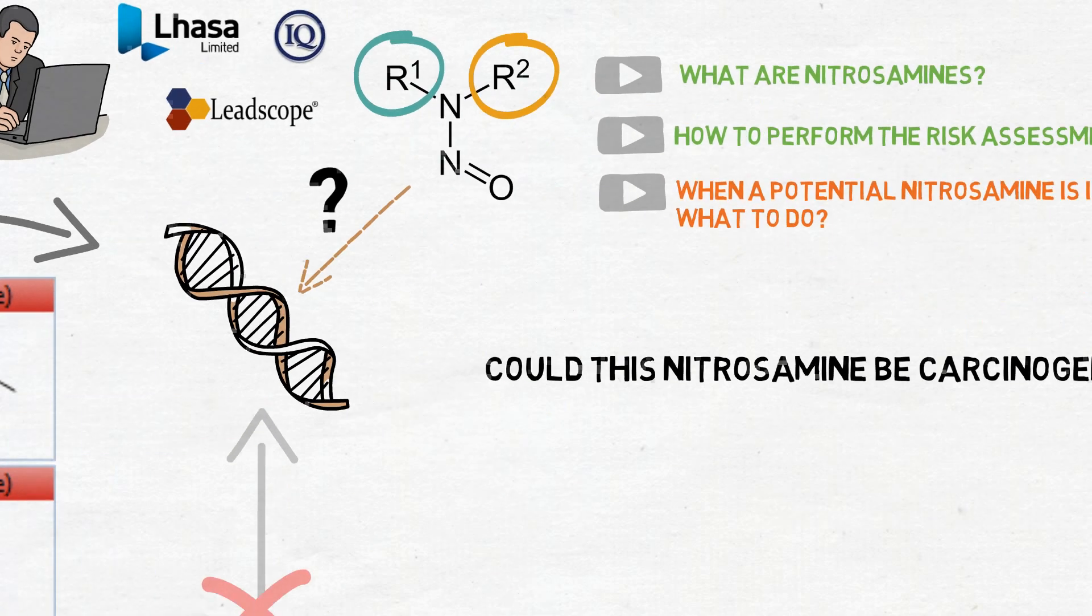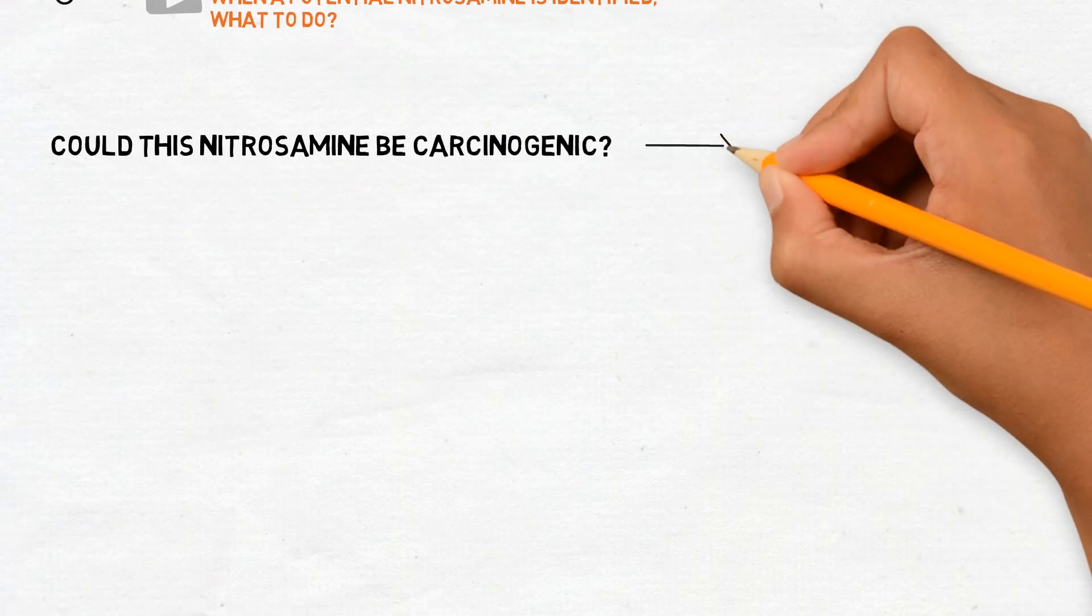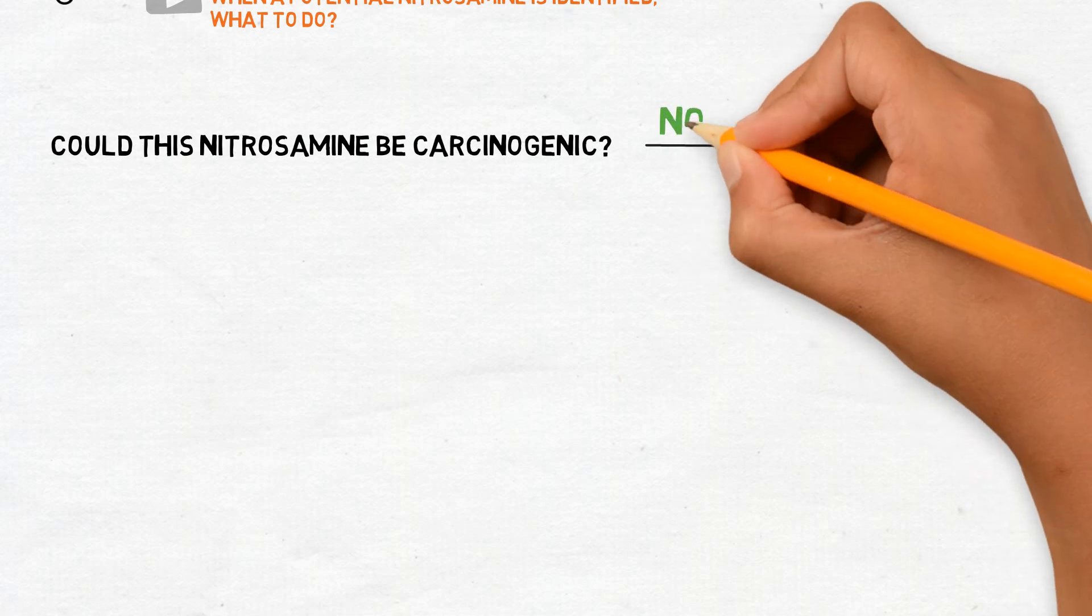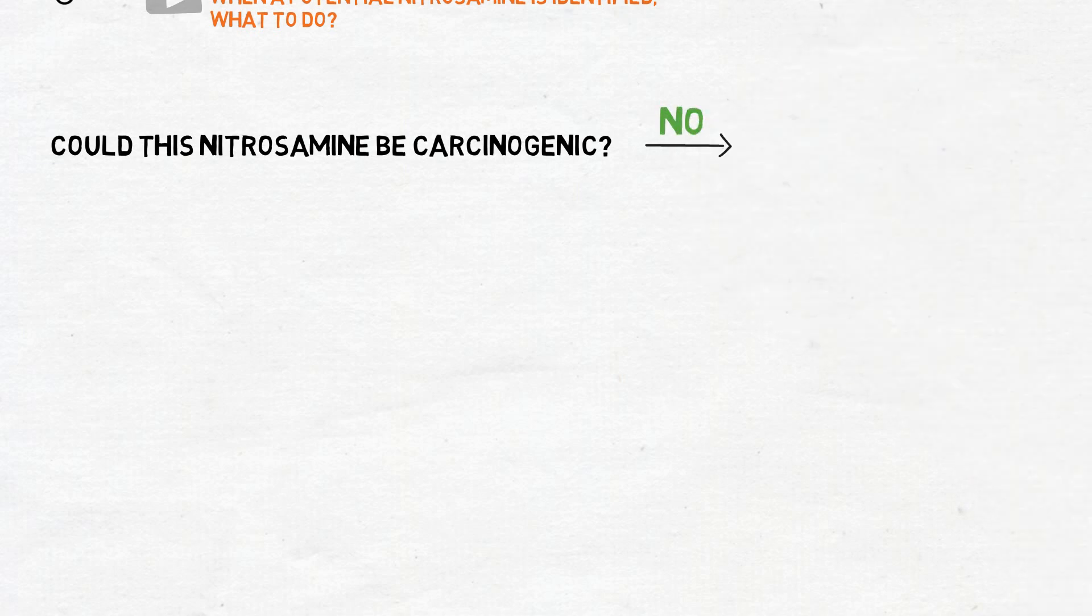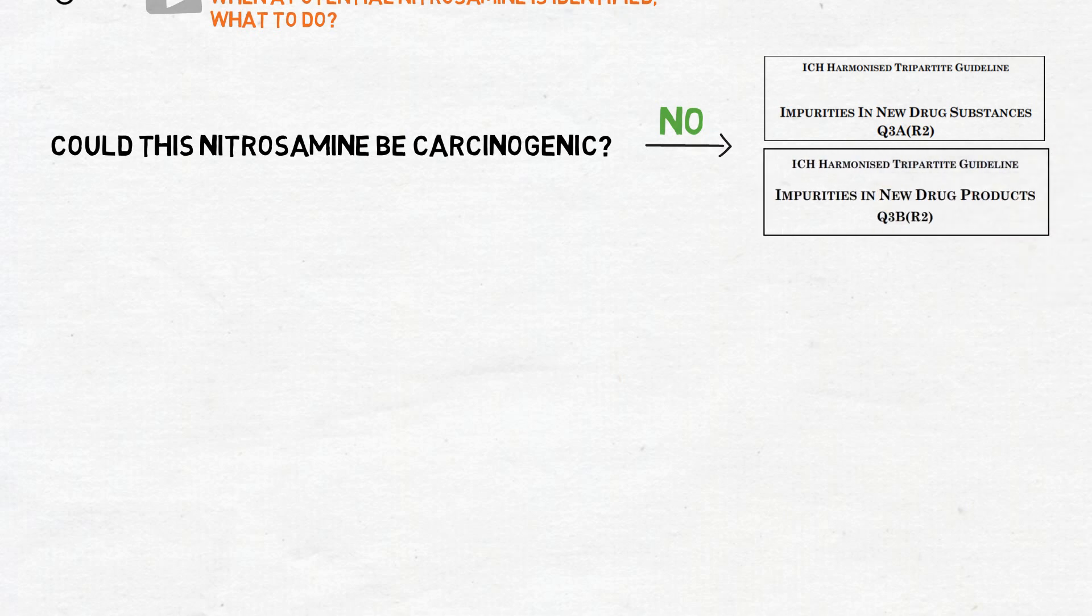So if we can prove that the nitrosamine will not be mutagenic or carcinogenic, we can treat it as a regular impurity under the scope of ICH Q3A and ICH Q3B.